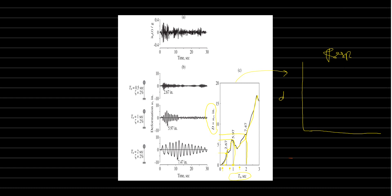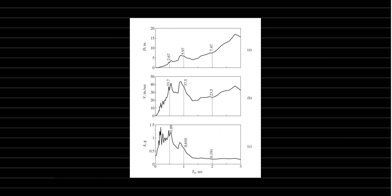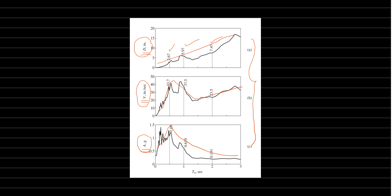This response spectrum can be constructed for displacement, velocity, and acceleration. The same response values — 2.67, 5.97, 7.47 — are expressed in terms of displacement, velocity, and acceleration respectively. Displacement tends to increase, while acceleration behaves differently, and velocity falls in between. These curves are related through differentiation, and together they form the complete response spectra.